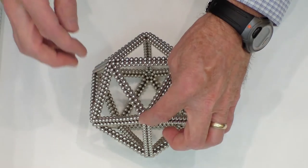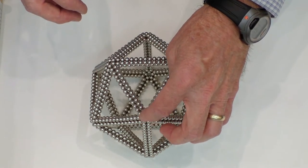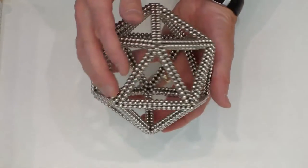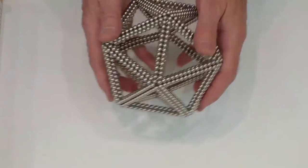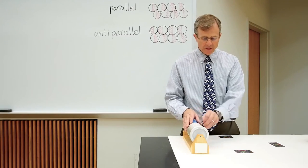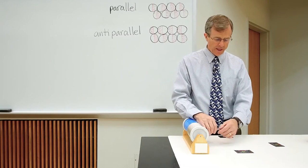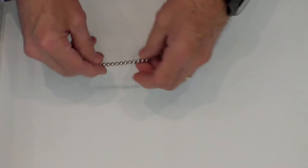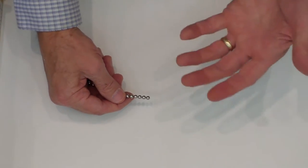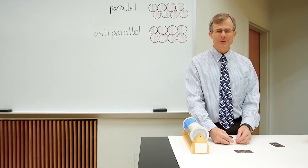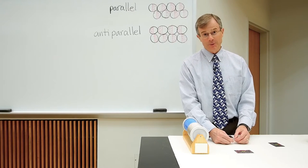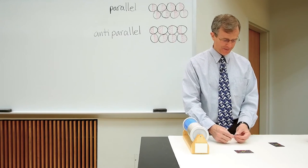Five triangles meet at each vertex, so it's a very beautiful shape. The magnets have interesting magnetic properties that puzzled me at first. A lot of people have a lot of fun with these magnets building things, as we do in our particular family unit.